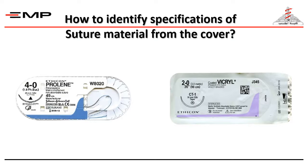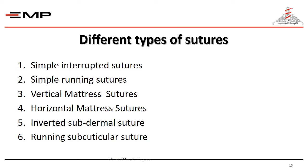How to identify specifications of suture material from the cover? By looking at the suture material cover, you should be able to identify the following: the manufacturer, the expiry date of the suture material, the type of suture material, the size of suture material, the type of needle body, and the type of needle point. All this will be demonstrated in the face-to-face lab setting.